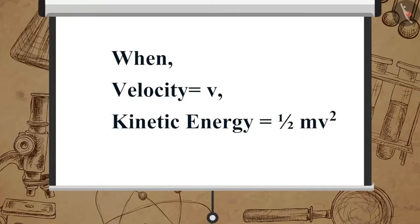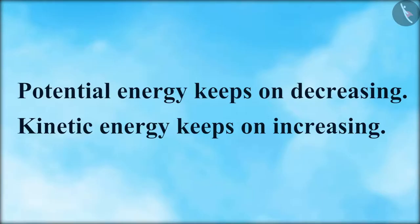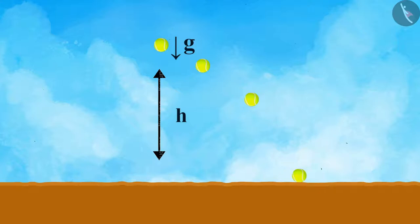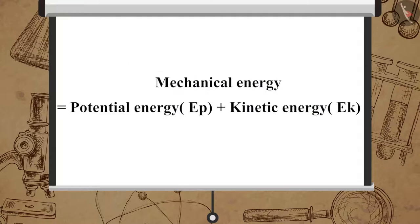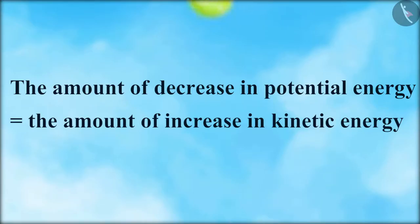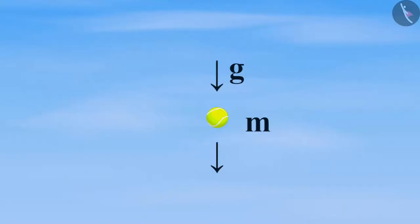If the velocity of the ball at a given instance is V, then its kinetic energy is ½MV². When the ball continues to fall, the potential energy keeps on decreasing and the kinetic energy keeps on increasing. The summation of potential energy and kinetic energy of an object always remains constant at all points: PE + KE = constant, or MGH + ½MV² = constant. The potential energy and kinetic energy together form the mechanical energy of the object. The amount of decrease in potential energy equals the amount of increase in kinetic energy, so there is a continuous transformation of gravitational potential energy to kinetic energy.